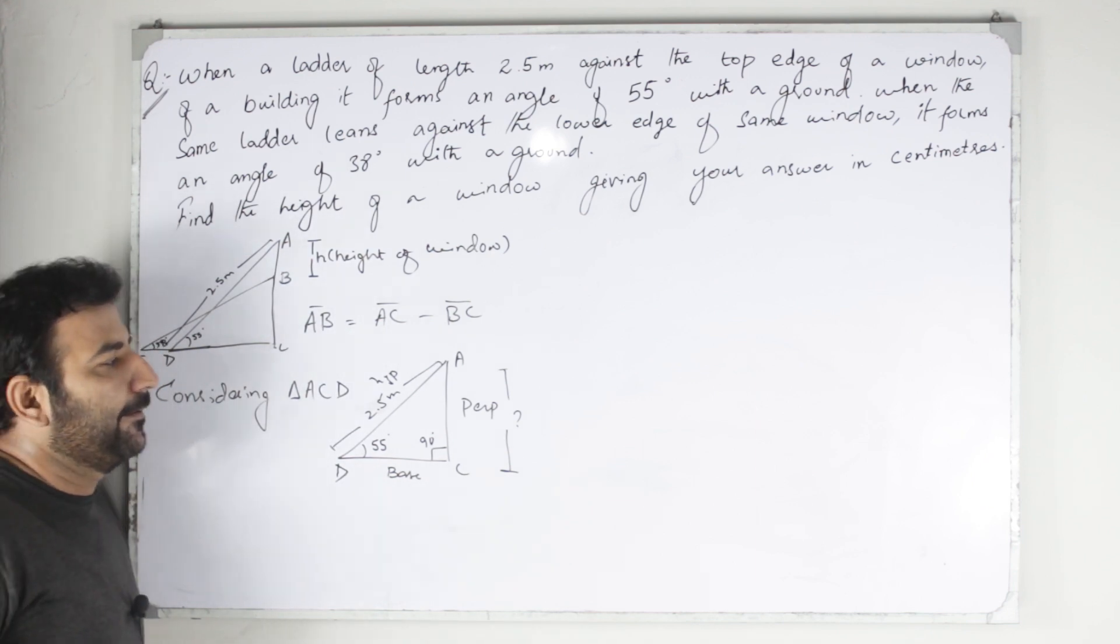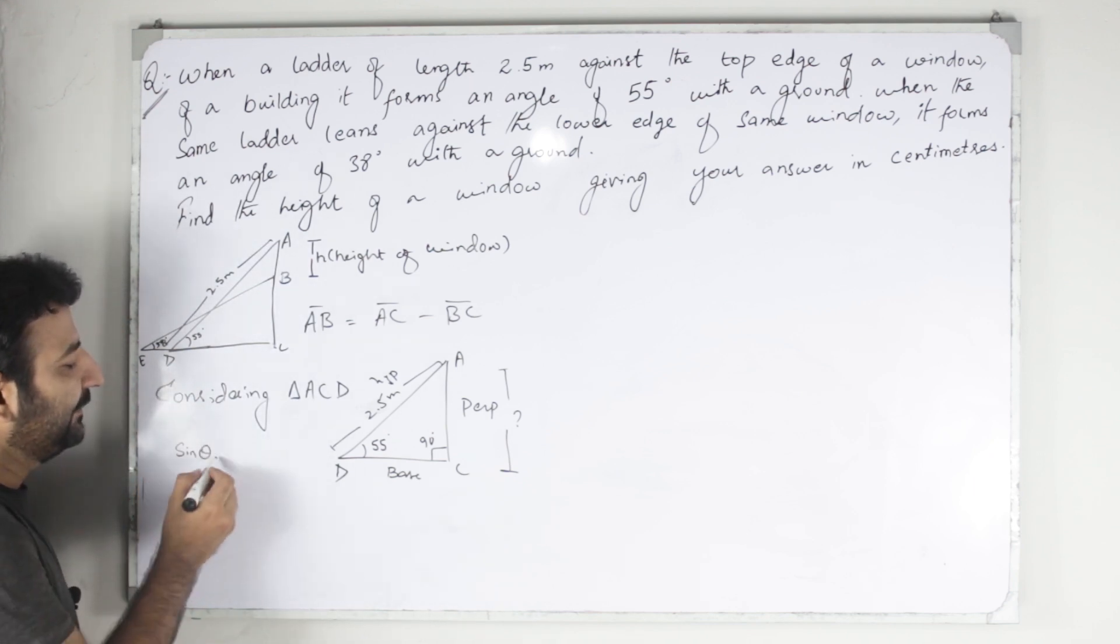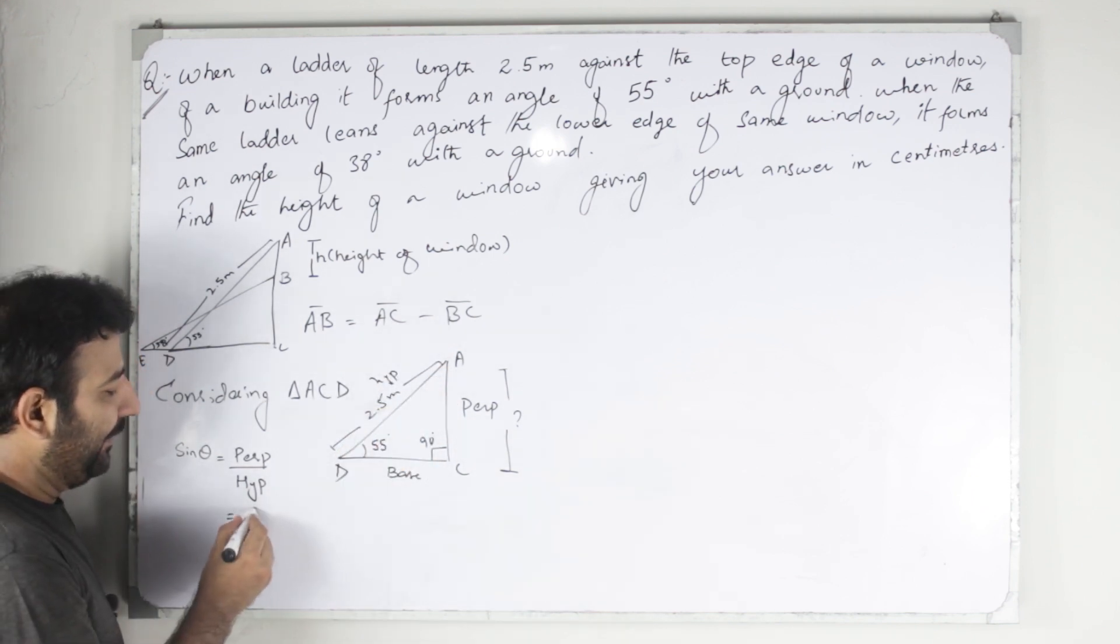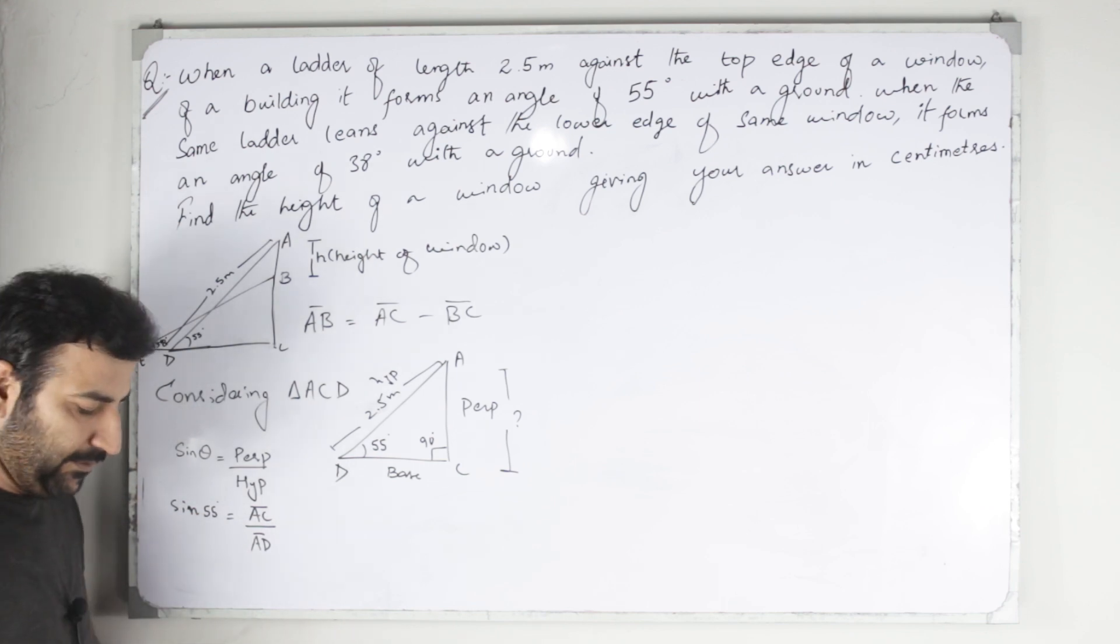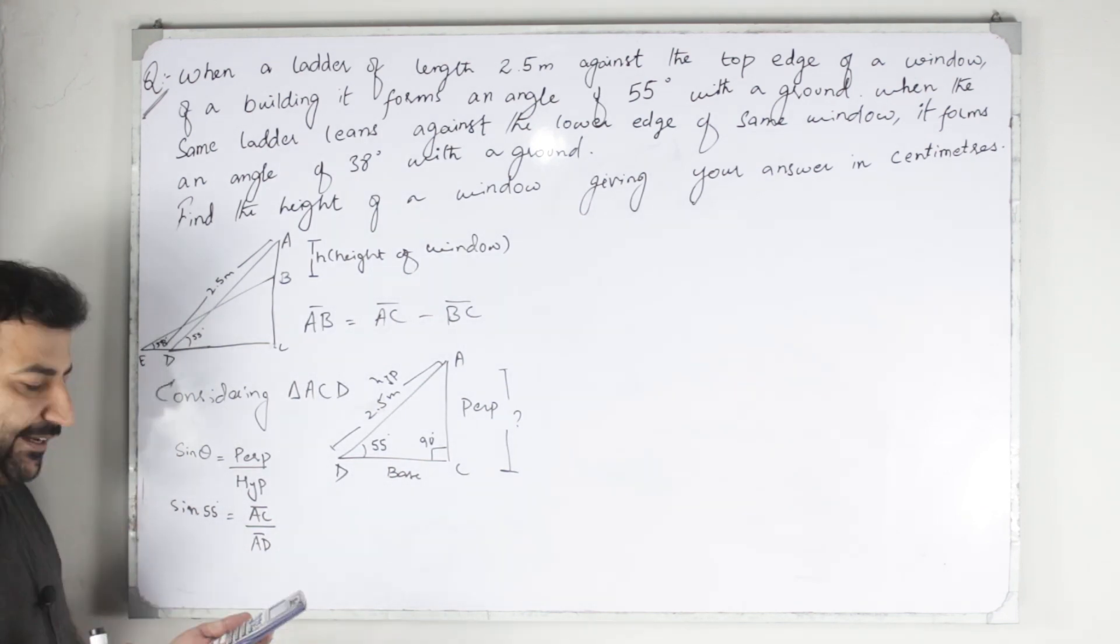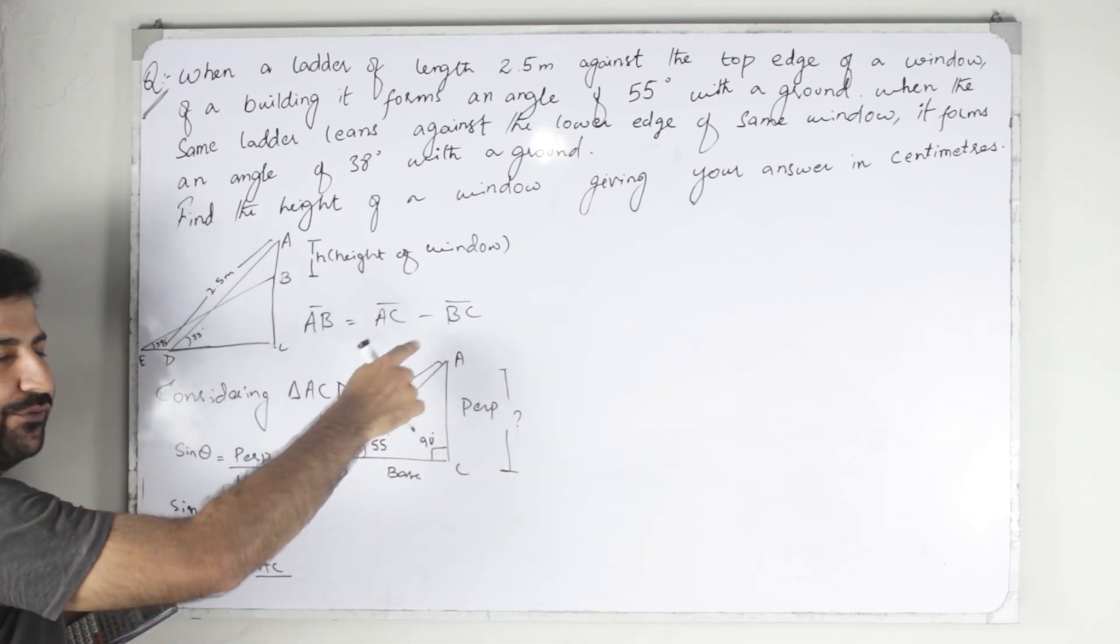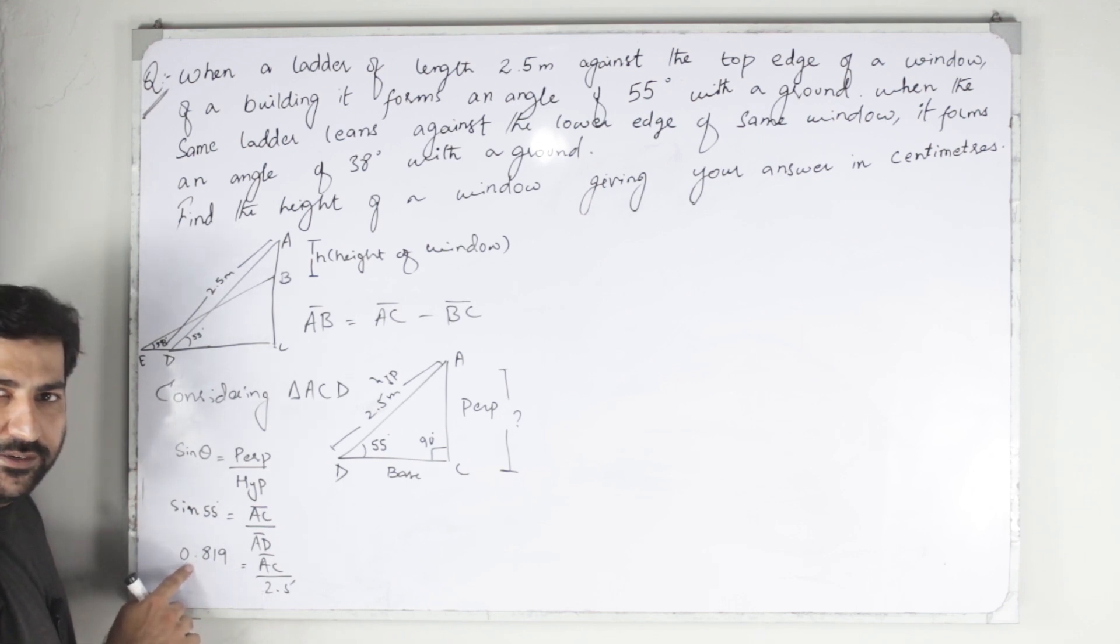We have to find side AC, the perpendicular, and I am going to use a trigonometric ratio. Sin θ equals perpendicular upon hypotenuse. The perpendicular side is AC and the hypotenuse is AD. The angle is 55 degrees. Sin 55 degrees equals 0.819, and AD is 2.5. We multiply 2.5 by 0.819.